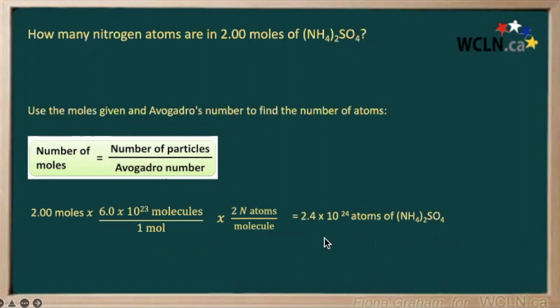And our final answer will be in atoms, giving us 2.4 times 10 to the 24 atoms of nitrogen in ammonium sulfate.